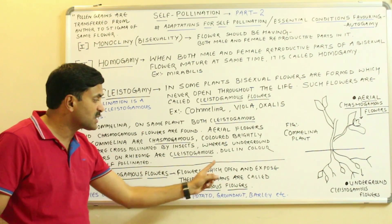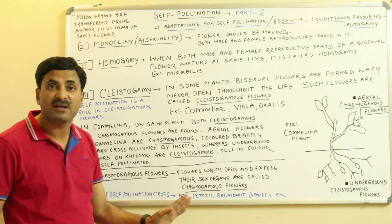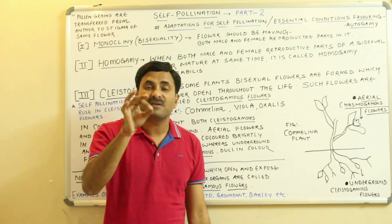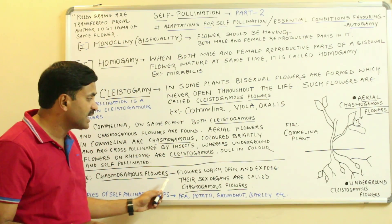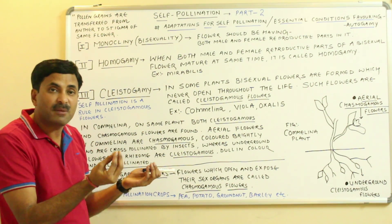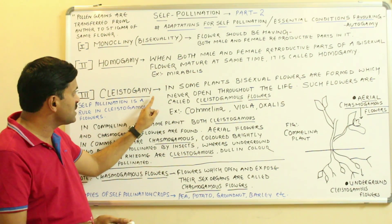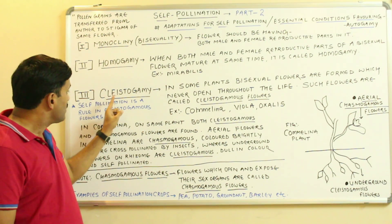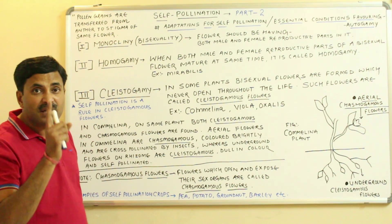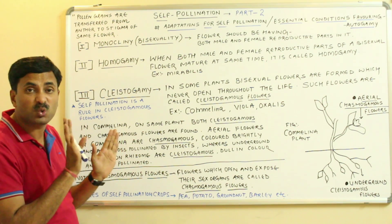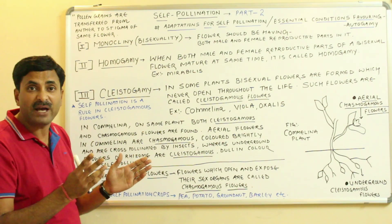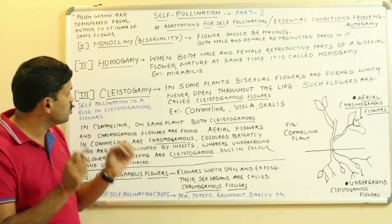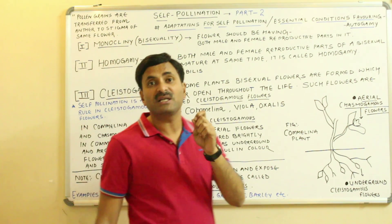In contrast, a chasmogamous flower is a flower which opens and exposes its sex organs outside. So a cleistogamous flower is a bisexual flower which never opens in its lifetime and its sex organs are hidden, while a chasmogamous flower is open and its reproductive organs are exposed. The best examples of chasmogamous flowers are found in Commelina, Viola, and Oxalis. Self-pollination is a rule in cleistogamous flowers because the flower never opens, so no pollinating agent can transfer pollen grains into it.